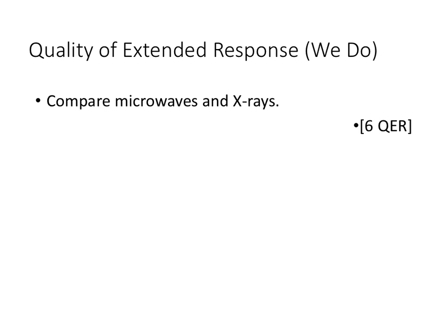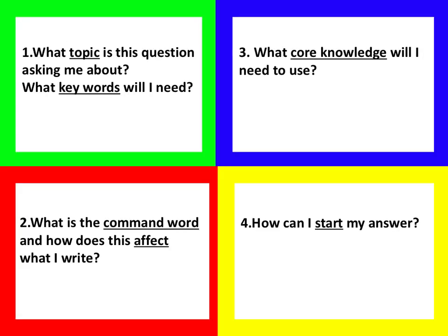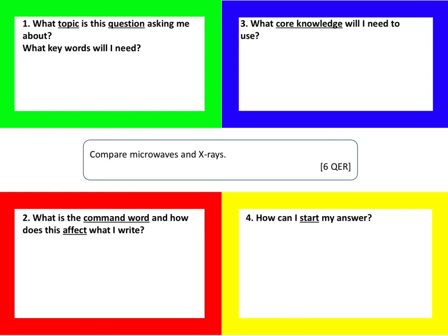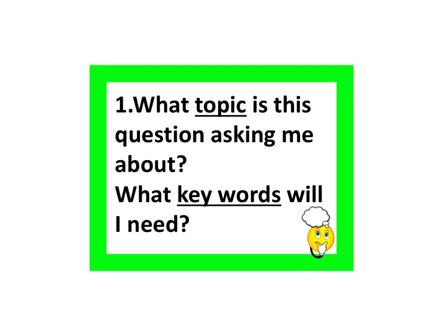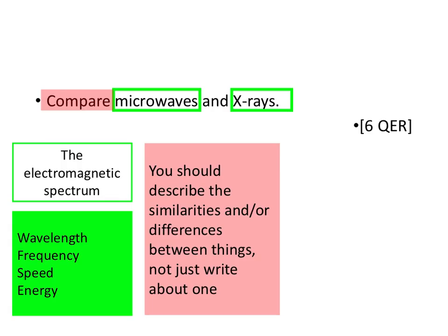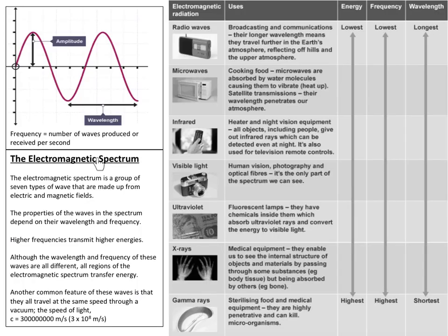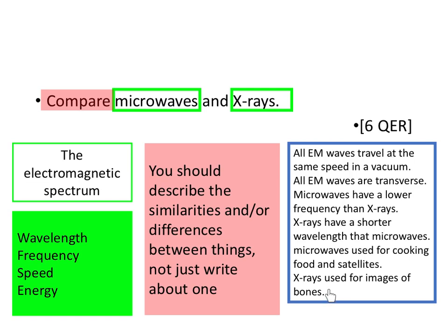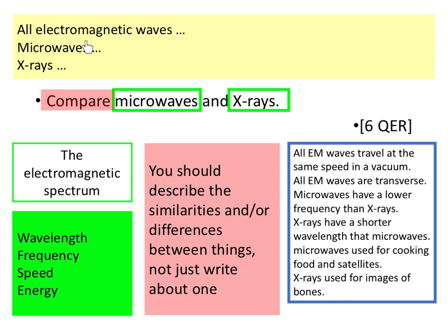The next question we'll do together is about microwaves and X-rays. Set it out with the four boxes the same way. The topic is still the electromagnetic spectrum; keywords are wavelength, frequency, energy, and speed. The command word is still 'compare.' Some core knowledge is the same because certain properties are true for all electromagnetic waves, but now we focus on microwaves and X-rays specifically.